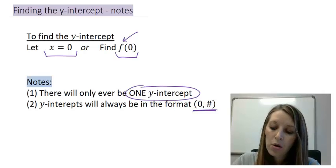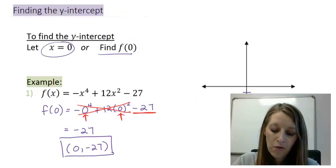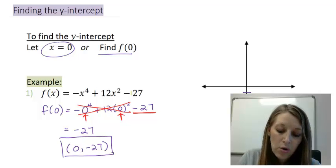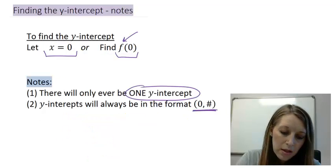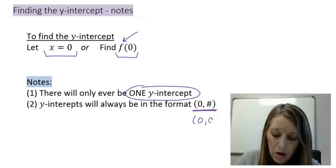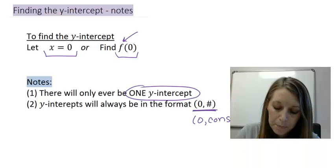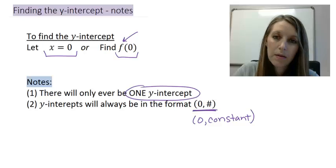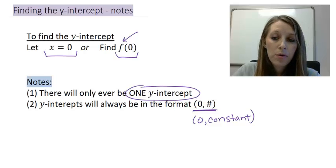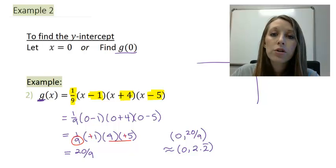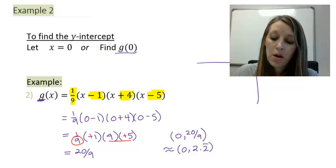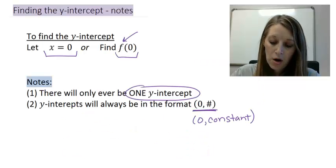Now, if your polynomial comes in expanded form, like our first example, the number that you're going to get out is always your constant term. So that's maybe another note that you want to make here. This is going to be (0, constant term). If your polynomial is in factored format, like our second example, it's the same thing. We're just going to have to multiply the constant term from each factor, and that gives us our y-intercept.